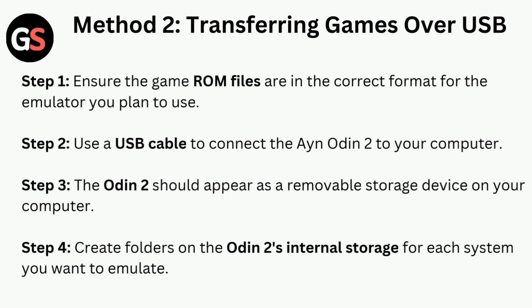Method 2 is transferring games over USB. Step 1: ensure the game ROM files are in the correct format for the emulator you plan to use. Step 2: use a USB cable to connect the Ayn Odin 2 to your computer. Step 3: the Odin 2 should appear as a removable storage device on your computer. Step 4: create folders on the Odin 2's internal storage for each system you want to emulate.